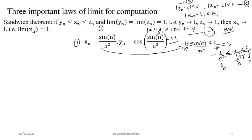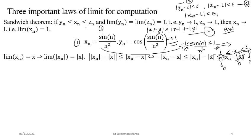Another example: the limit of cosine of (1/n²) can be found easily — the interior term 1/n² approaches zero, and cosine of zero is one, so this sequence approaches one. These are direct applications of the Sandwich Theorem and there are many sequences whose limits can be found in this way.